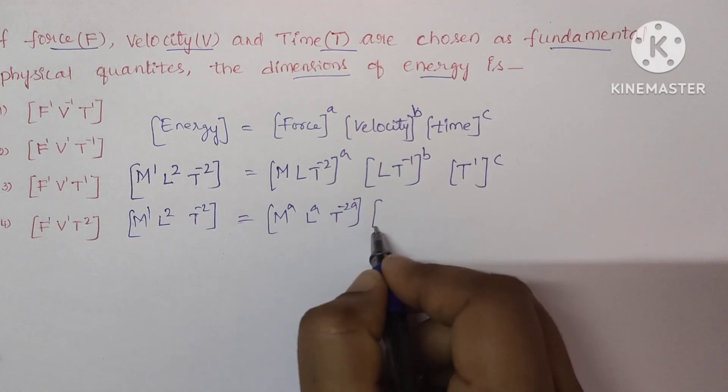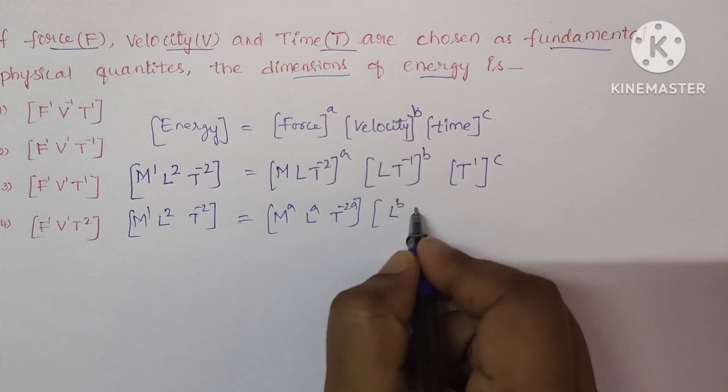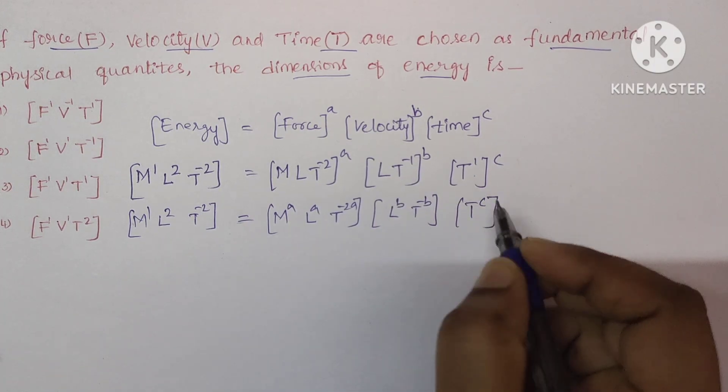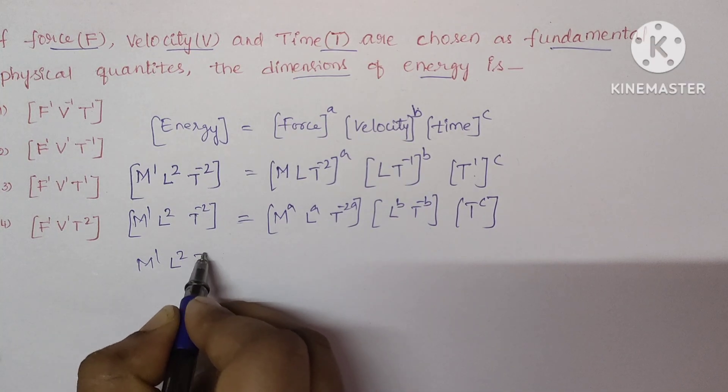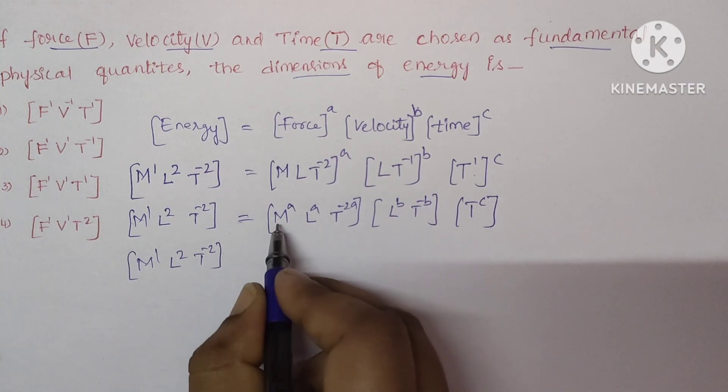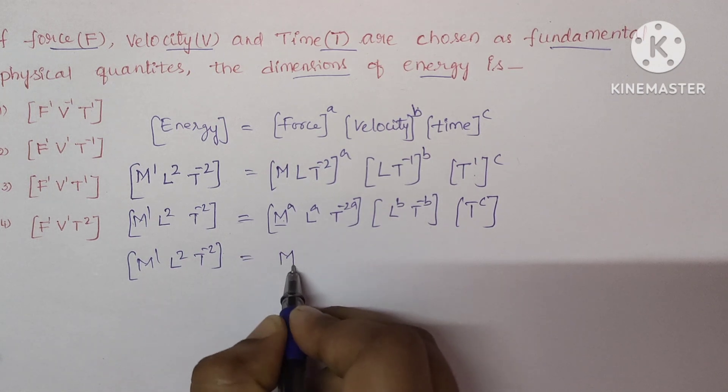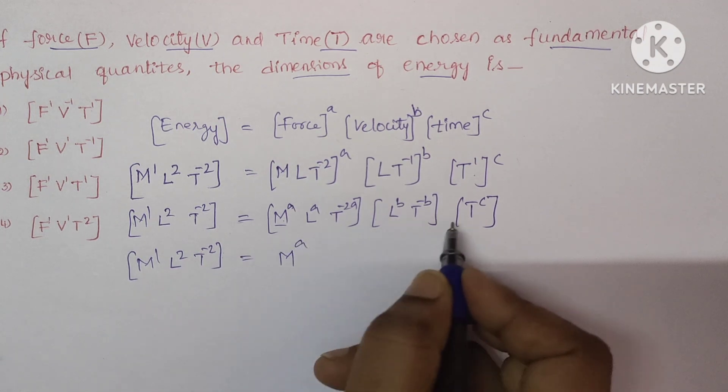Next, here also L power B T power minus B here it is T power C, okay. Now write only mass terms at one place. So which is M power here it is A, no other mass terms.